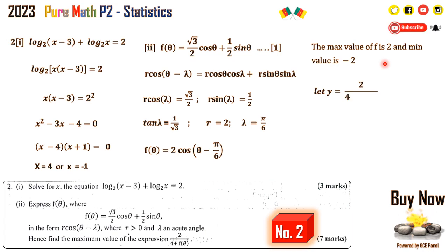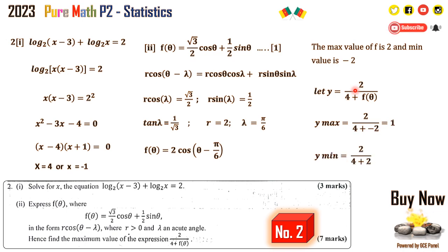So the maximum value of 2 over (4 plus f of theta) is 2 over (4 plus 2), giving 2 over 6 or 1 over 3. However, since we need to check whether the denominator can be negative, we consider f of theta equals negative 2, giving 4 plus (negative 2) equals 2, and when f of theta is minimum the denominator is minimum and the overall expression is maximum.